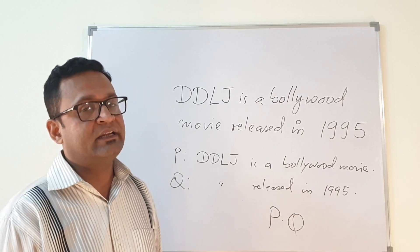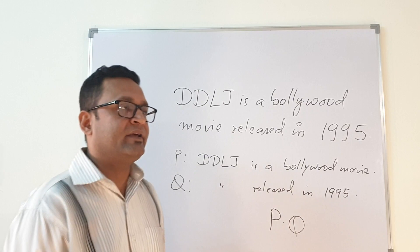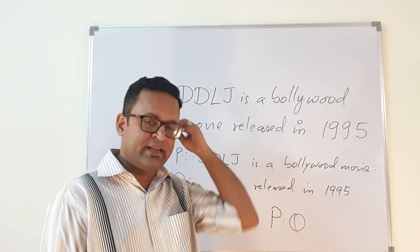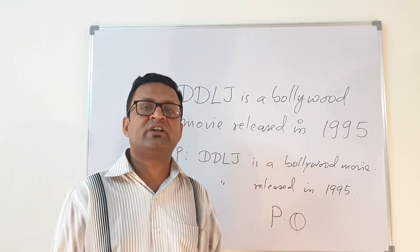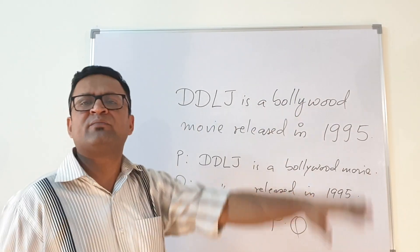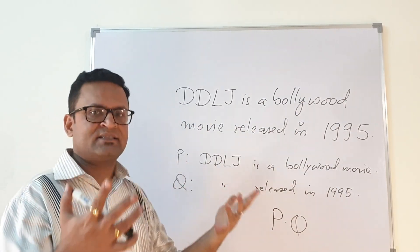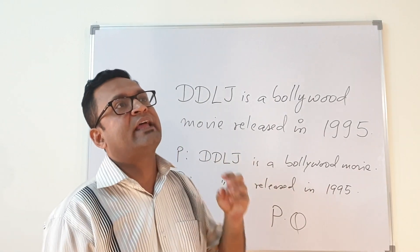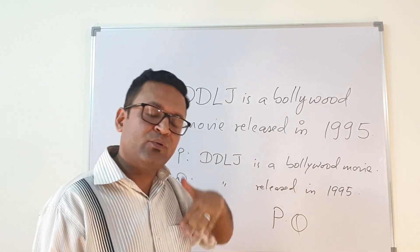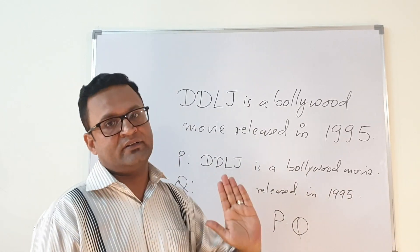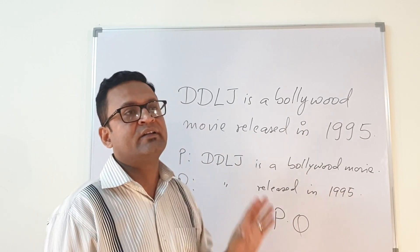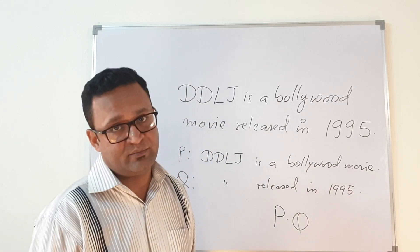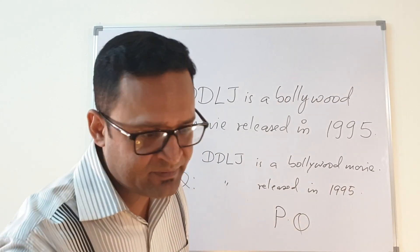A teacher may give no marks or partial marks if you miss anything — whether it's a negation, a conjunction, or if you incorrectly treat something as a simple proposition. You should understand: if something can be broken down further, you need to keep breaking it down until it cannot be broken further. Only then does it become a simple proposition. This understanding must be clear in your mind.